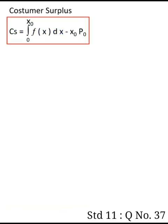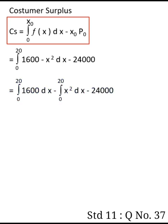Now for consumer surplus: CS equals integral from 0 to x naught of f of x dx minus x naught p naught, where f of x is the demand function. So it's integral from 0 to 20 of 1600 minus x square dx minus 24,000.